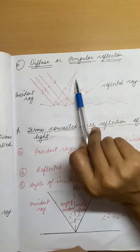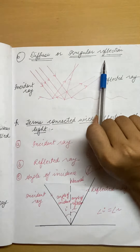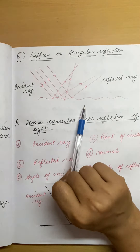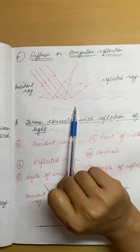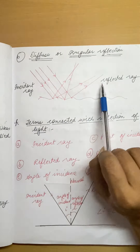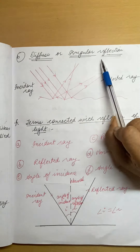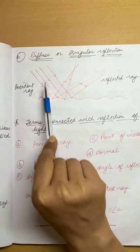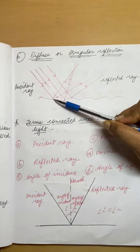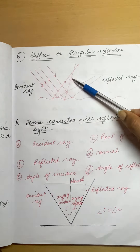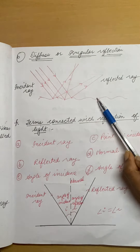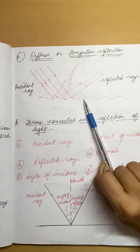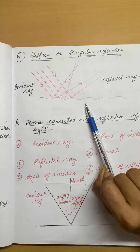Next is diffuse or irregular reflection. Irregular reflection takes place when the surface is rough and not polished — for example, a broken road that is not smooth. There the reflection that takes place is irregular or diffuse reflection. The incident rays coming in are reflected back through different angles and are not parallel to each other, because the surface is rough. This reflection is called diffuse reflection or irregular reflection.